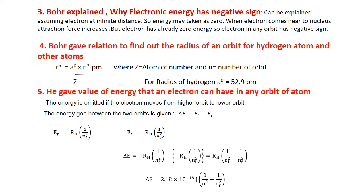So, as the electron comes closer to the nucleus, its electronic energy becomes more and more negative — meaning the closer the electron is to the nucleus, the greater its energy in magnitude.